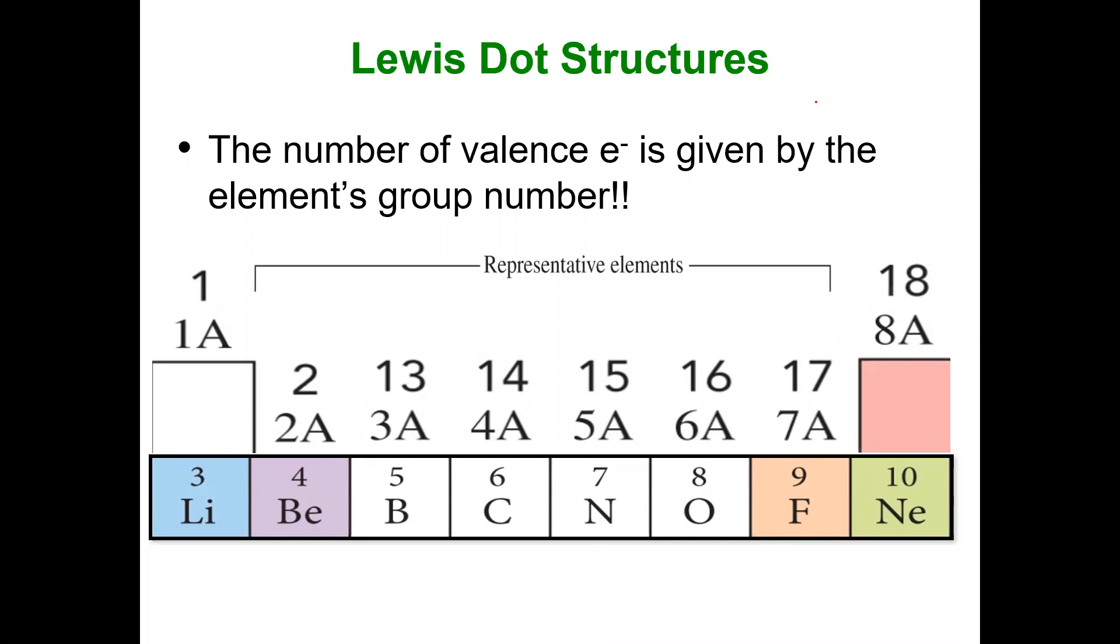So again, group 1A elements have one valence electron, so they have one dot. An example, group 4A elements have four valence electrons, so they have four dots.